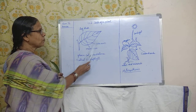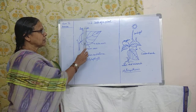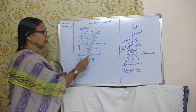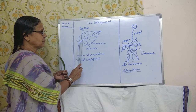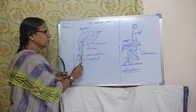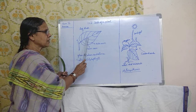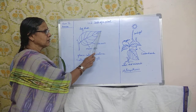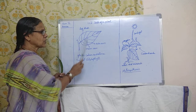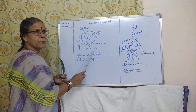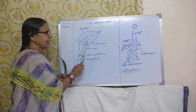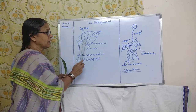Now coming to the parts of the leaf. The flat, broad part is called the leaf blade. And one line, one tube running in the middle of the leaf blade — this is called the main vein.